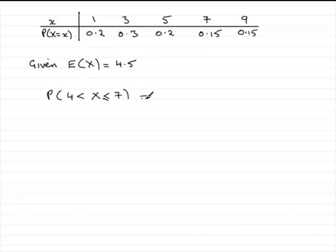To work that out, very easy. All you need to do is look at the numbers that are greater than 4 and less than or equal to 7. So that's the probability that X equals 5 plus the probability that X equals 7.